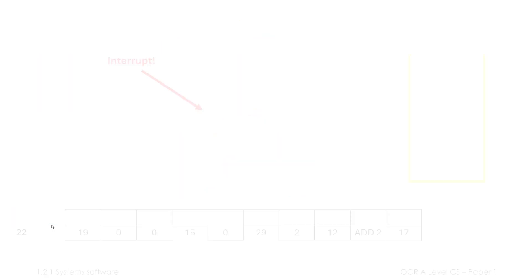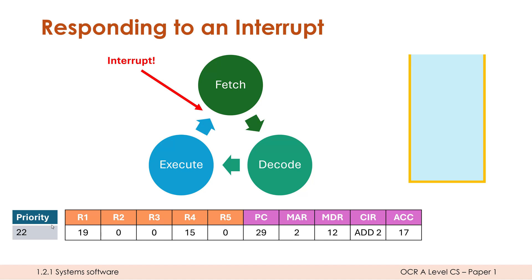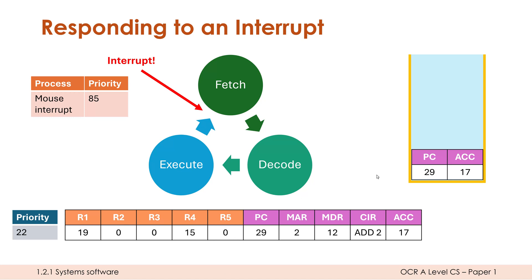Now we get to the point where we're checking for an interrupt — and one has occurred. The control bus says an interrupt has happened. First job: check priorities. Let's say this interrupt is a mouse movement, and the OS thinks it's relatively important with a higher priority than what we're doing currently. So the current process is going to have to be paused. We save these register values to the stack — the program counter (PC) and accumulator (ACC) are arguably the two most important, but all register values would be saved to the stack, so they're safely in memory.